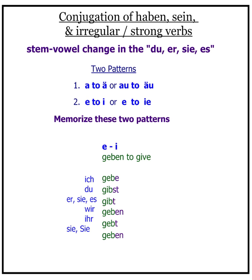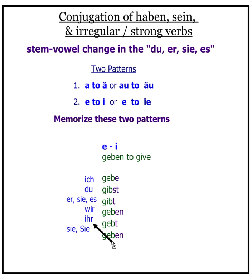There's no difference between regular and irregular verbs except in the du, er, sie, es — the second and third person singular. Memorize the definition of an irregular verb: stem vowel change in the du, er, sie, es. Be very careful that you don't give ihr, the informal plural, a stem vowel change. Ihr is just stem plus ending — no stem vowel change.